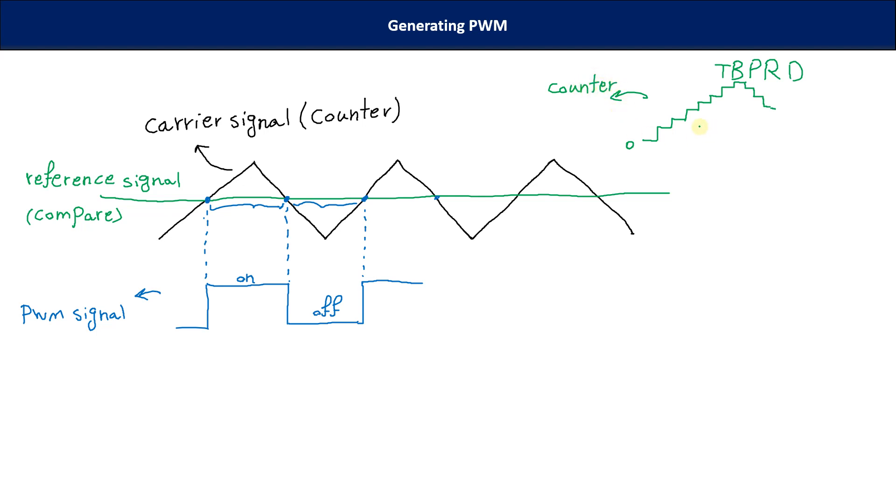But why this way? It's because in Microcontrollers, we don't have any analog signal. We have a digital signal. So, it counts up and again counts down.